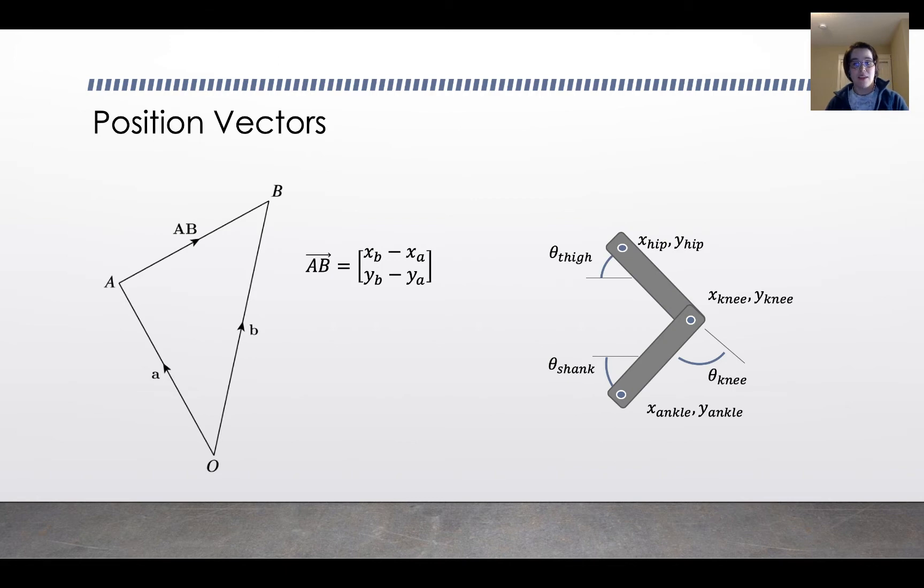You can take that and apply it to each of those segments on the body. The vector from the knee to the hip would be x hip minus x knee, y hip minus y knee. The vector from the knee to the ankle would similarly be x ankle minus x knee, y ankle minus y knee.